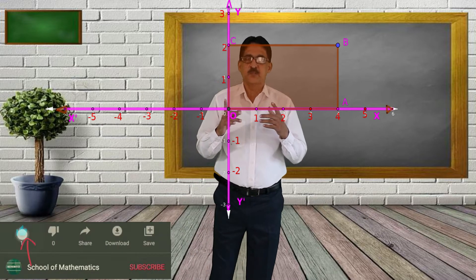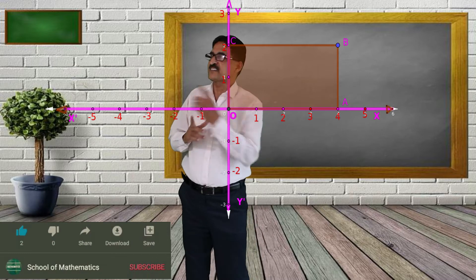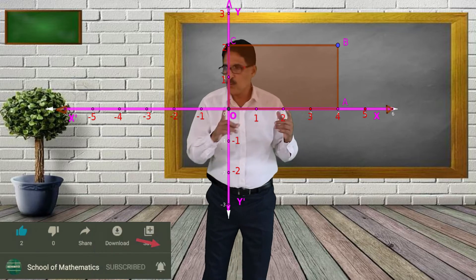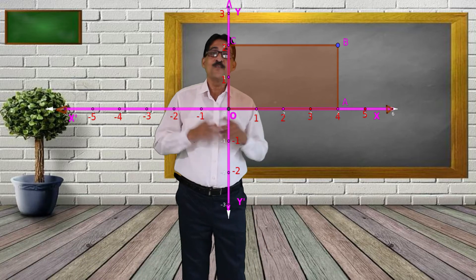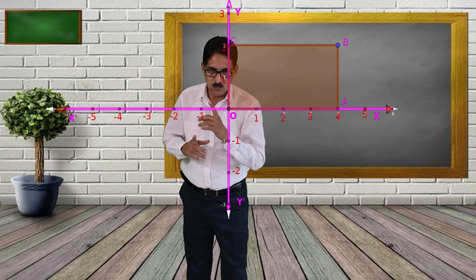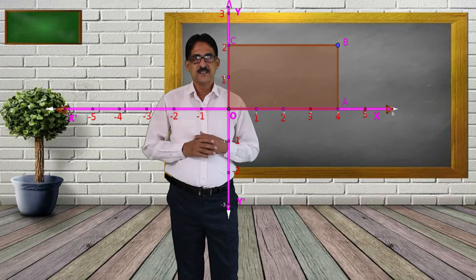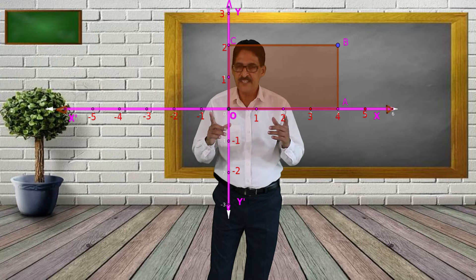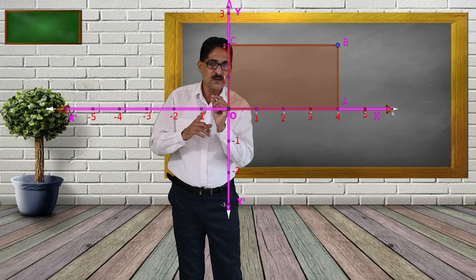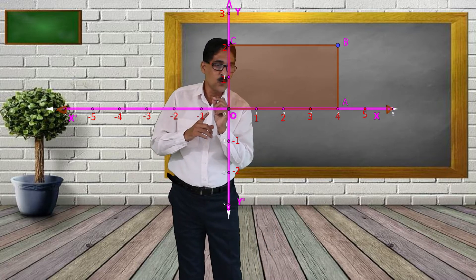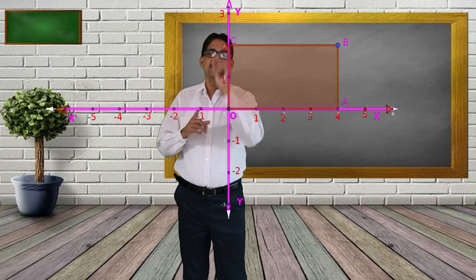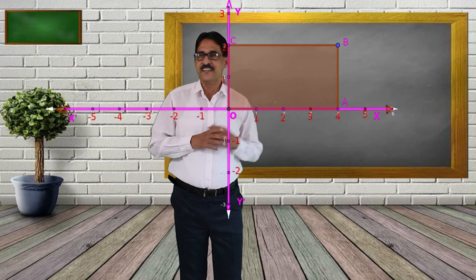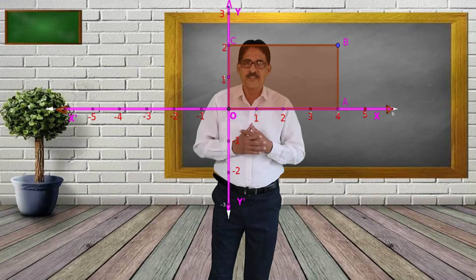We understood what is meant by the x-axis last class, so today we name the x-axis as X O X' and the y-axis as Y O Y' — just for naming purposes. Now we have to find the coordinates of rectangle O A B C.